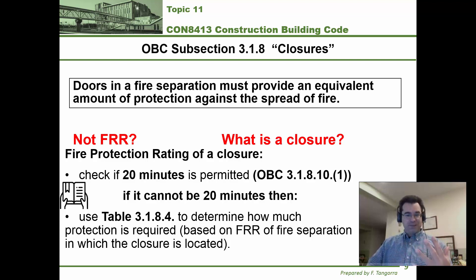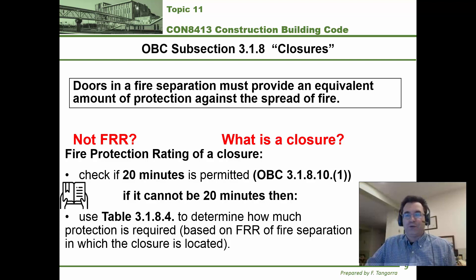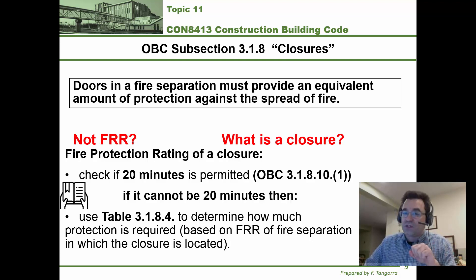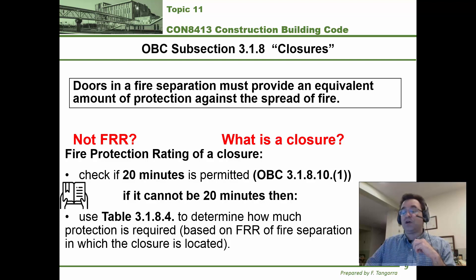Check out Table 3.1.8.4 — it's set up very simply. One column has the fire rating of walls, and once you find the fire rating of the wall, you go across and find the fire rating of the closure. One important point: the terminology for closures is 'fire protection rating' (FPR), not 'fire resistance rating' (FRR) as used for walls, floors, and roofs. Typically — not always — closures are allowed a smaller fire rating than the wall they're in.